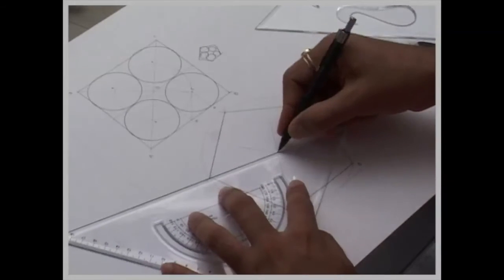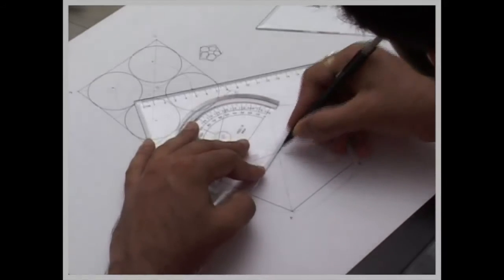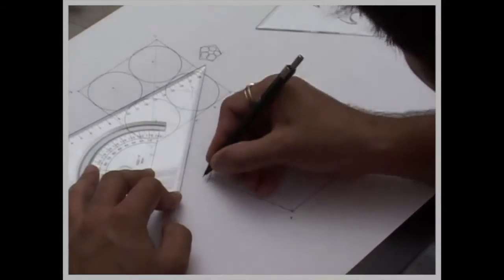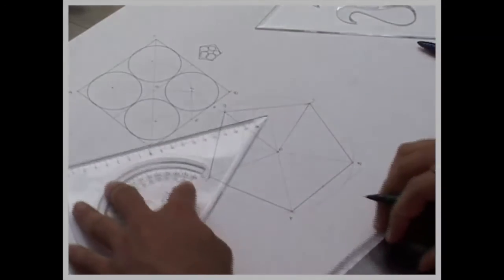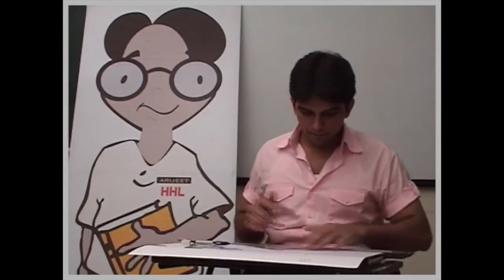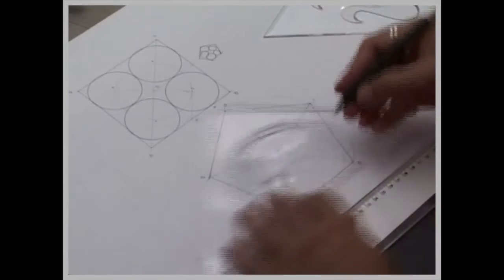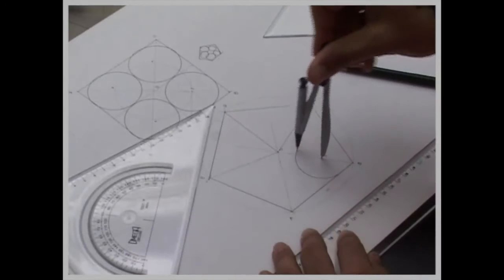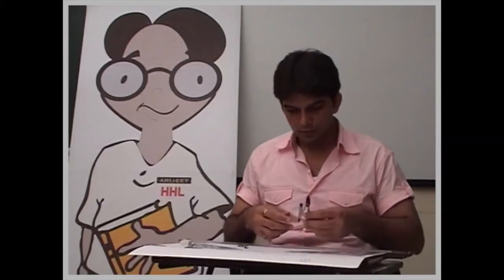again we will join all the corners with the center, with the center, let's say C, D, E, now from point M, we will take 45 degrees, wherever it will cut, that is point 1, we will draw circle 1,